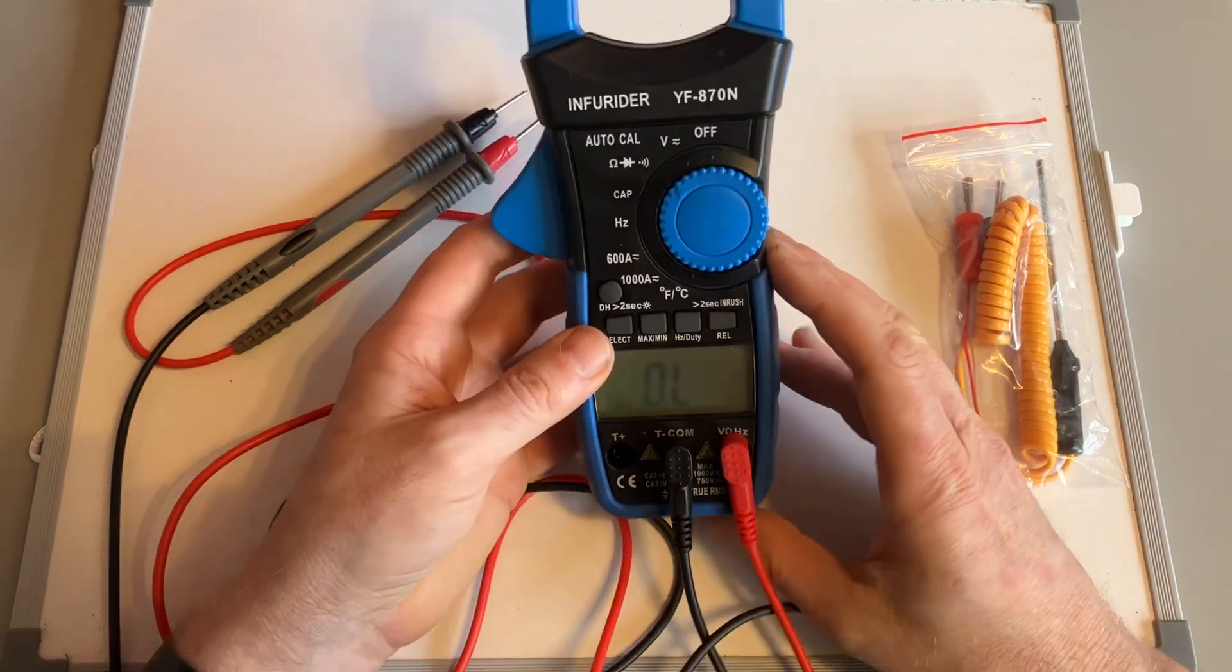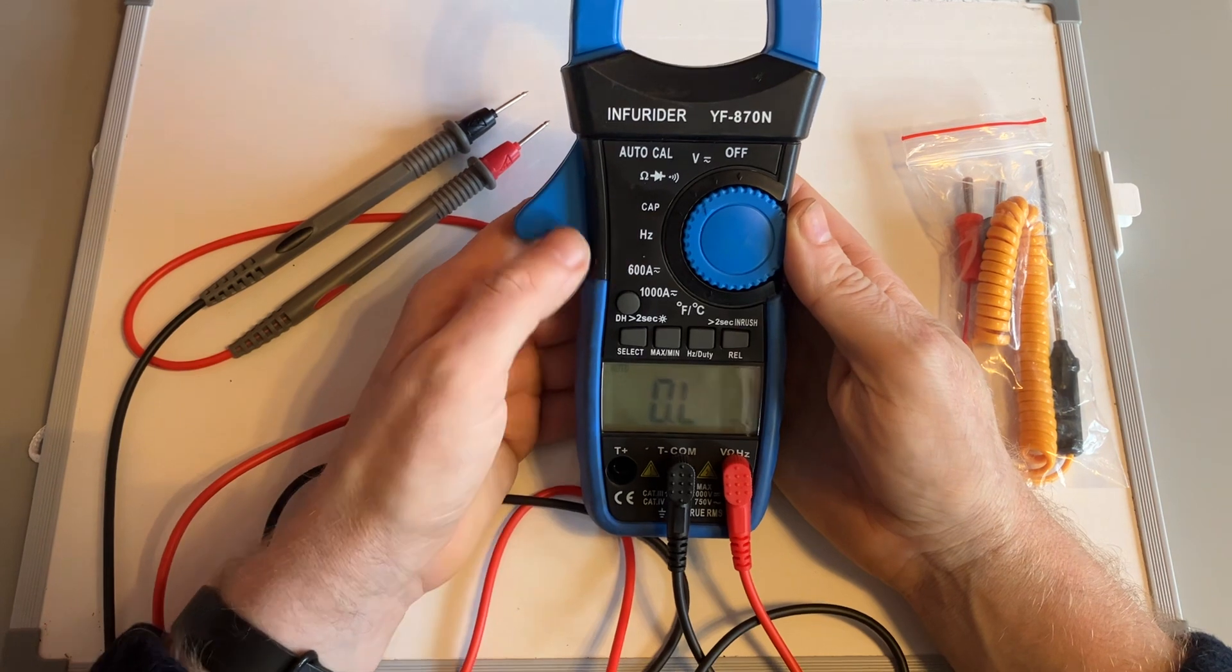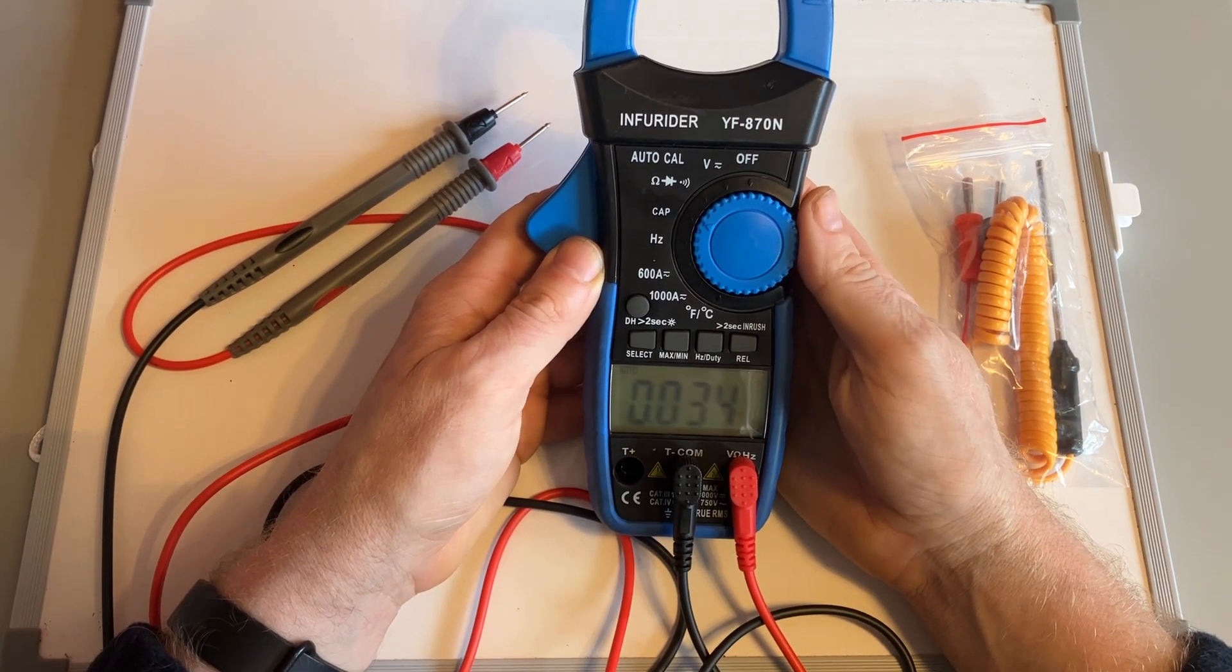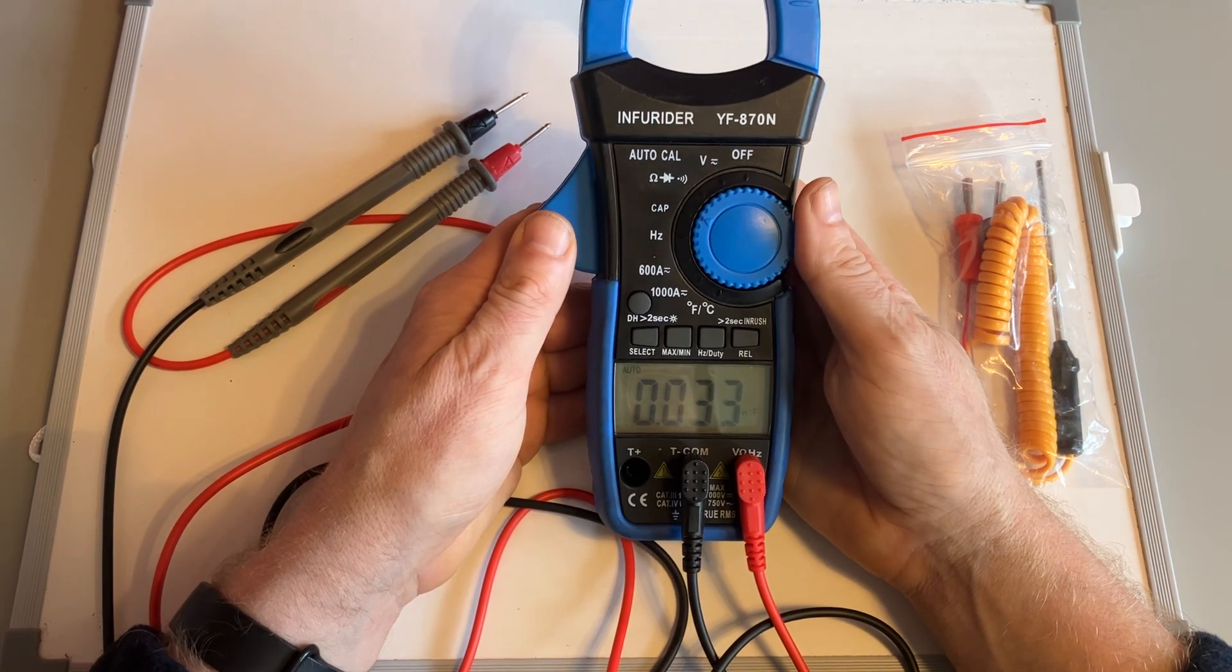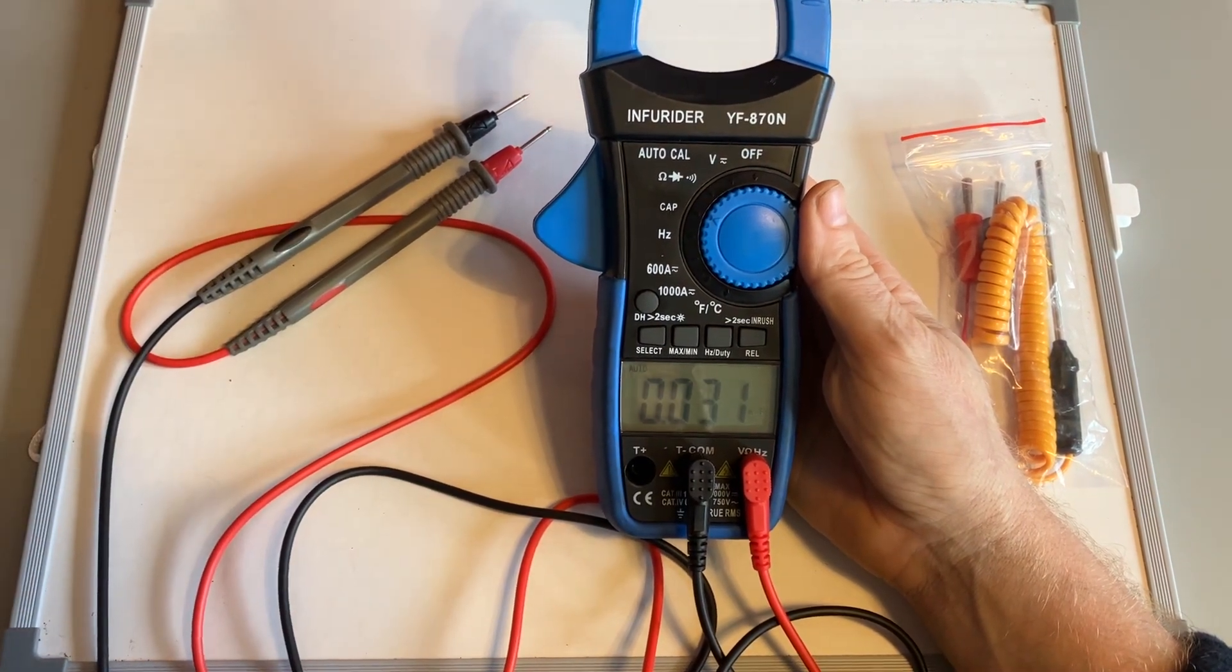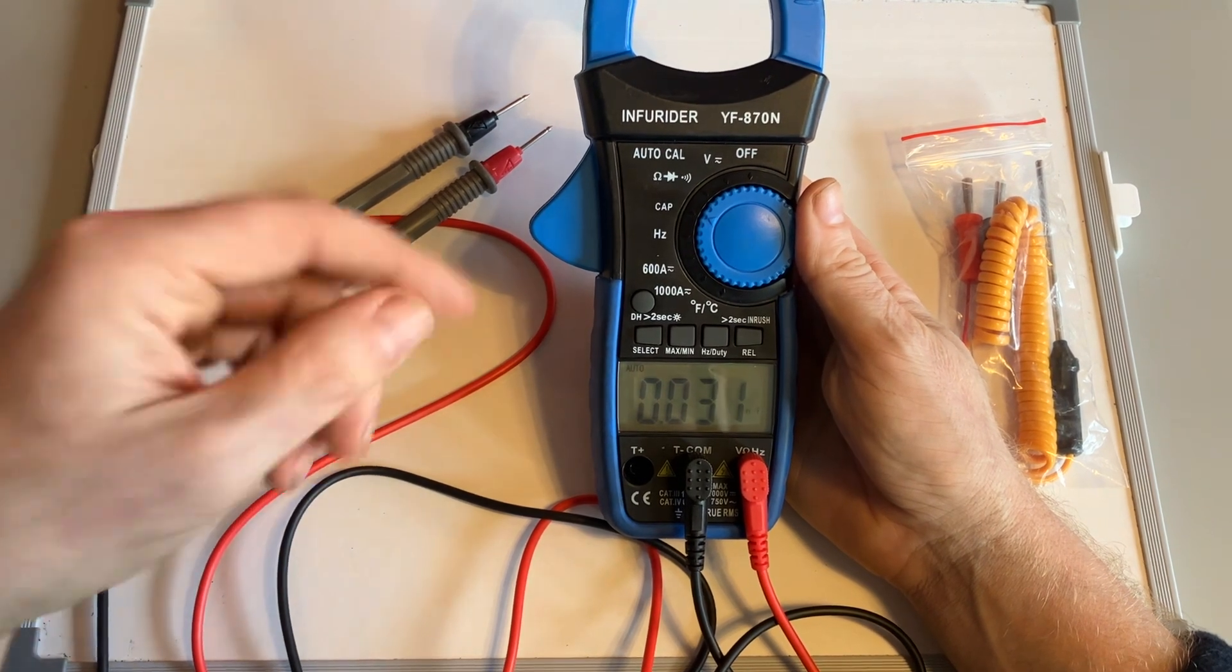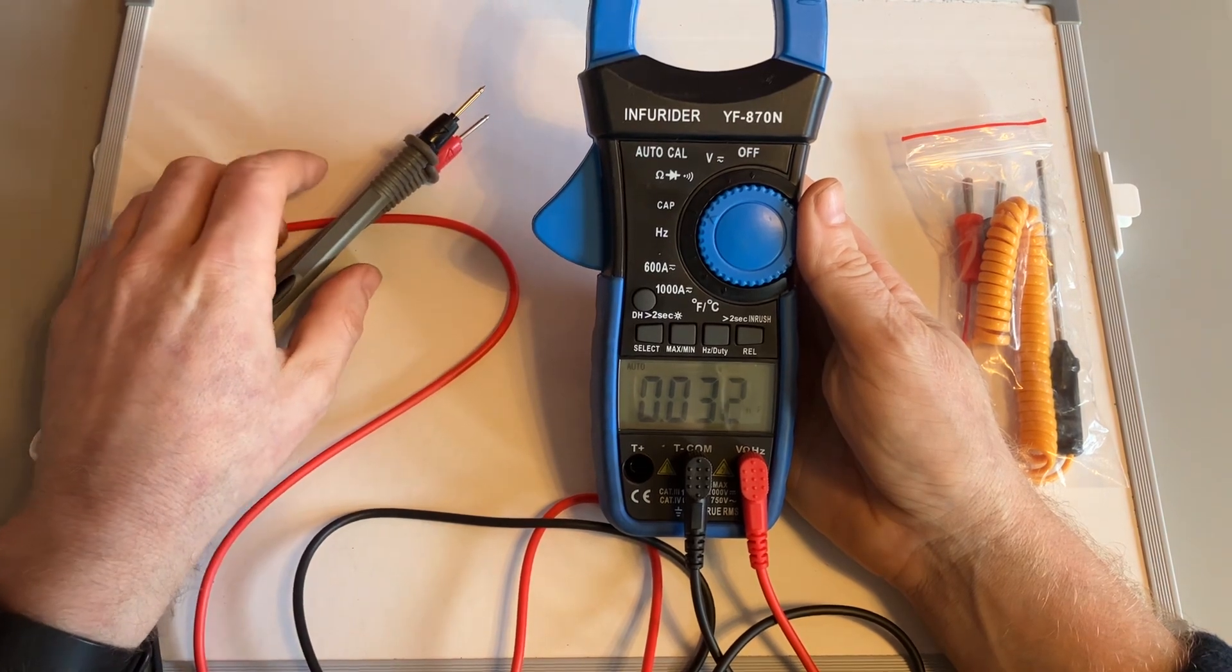So resistance for that one. This one is one that a mechanic wouldn't normally use which is capacitors or capacitance. So if I was using this to test capacitors on electronic circuit boards or similar, then that's the setting I would have for that. Again the probes would stay in the same place, you'd remove the capacitor, and the capacitor would have a rating that you'd be able to check if you work in that industry.